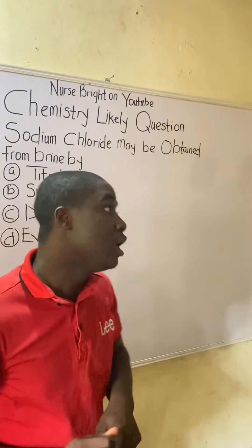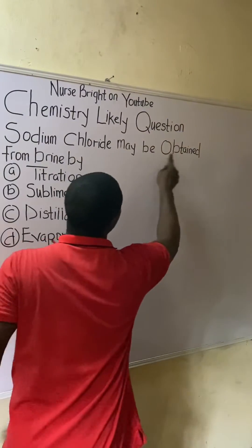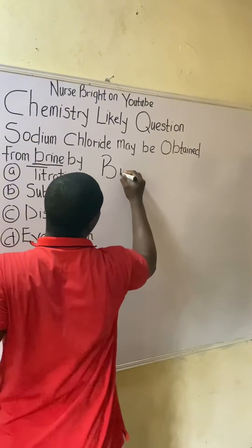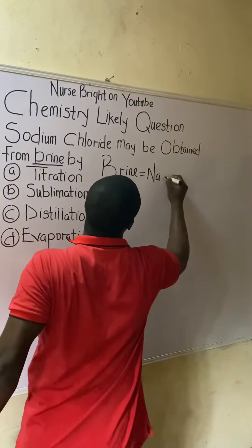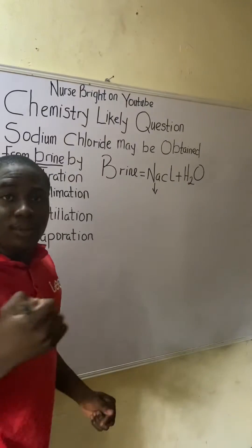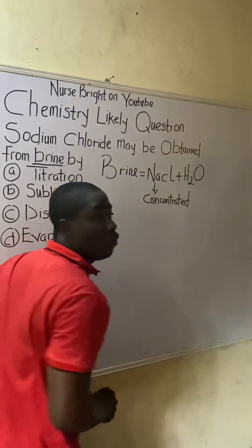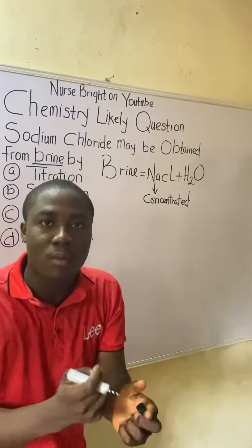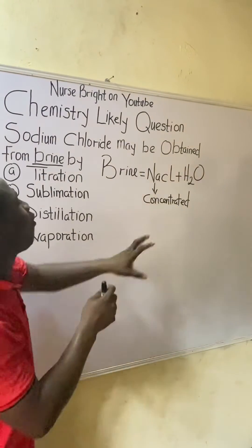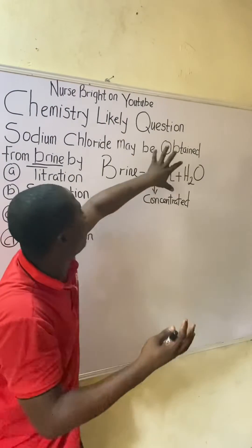Before we dive in, let's read the question again: 'Sodium chloride may be obtained from brine.' We have to know what brine is. Brine is simply concentrated sodium chloride dissolved in water. So sodium chloride is a component of brine, and they are asking us how we can separate sodium chloride from the water in brine.